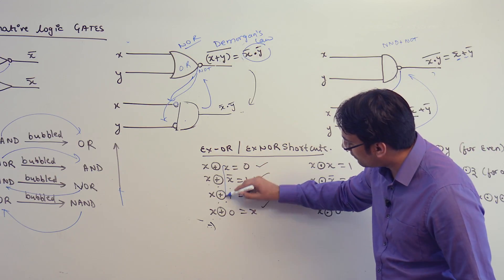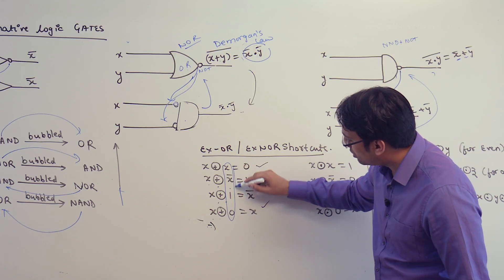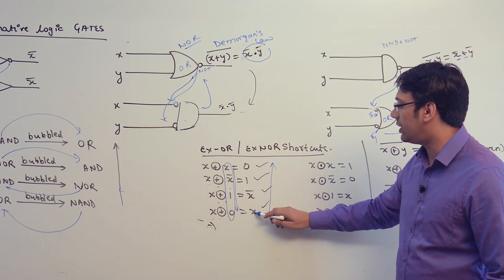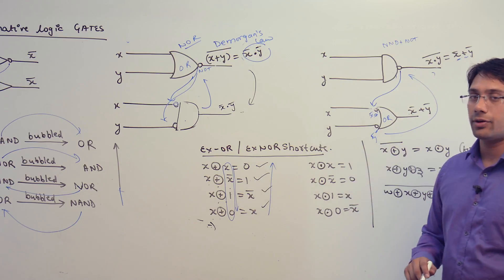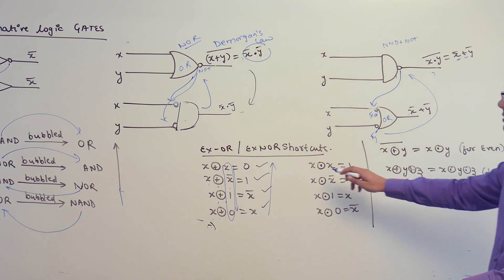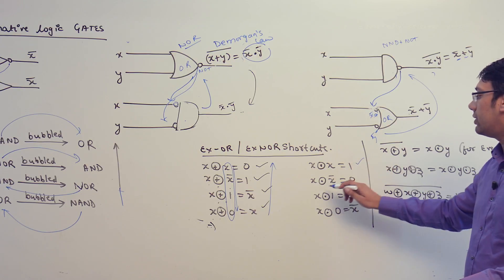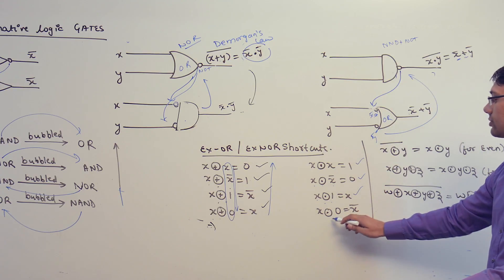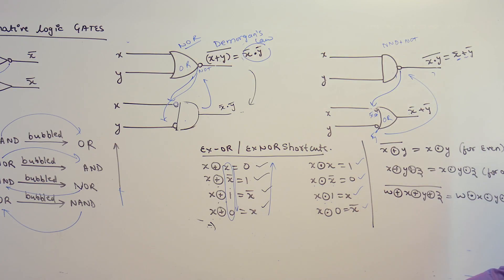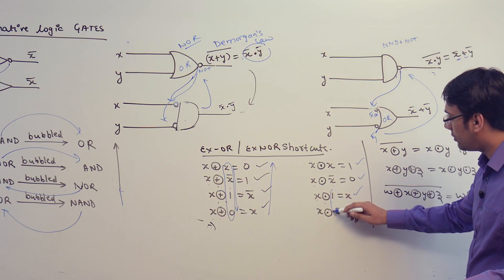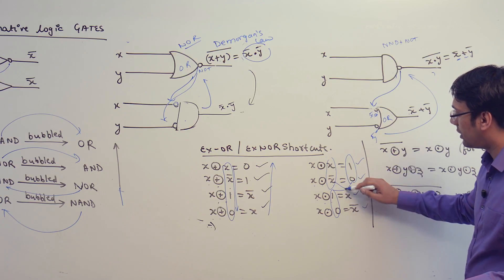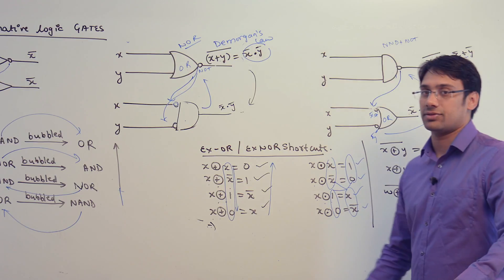One way to remember this: from top to bottom I have written X, X', 1, 0, and the results are the opposite — 0, 1, X', X. For XNOR: X XNOR X = 1; X XNOR X' = 0; X XNOR 1 = X; X XNOR 0 = X'. Here if I have written 1, 0, then I have also written 1, 0; if I have written X and X', then I have written X and X' — this is one way of remembering.